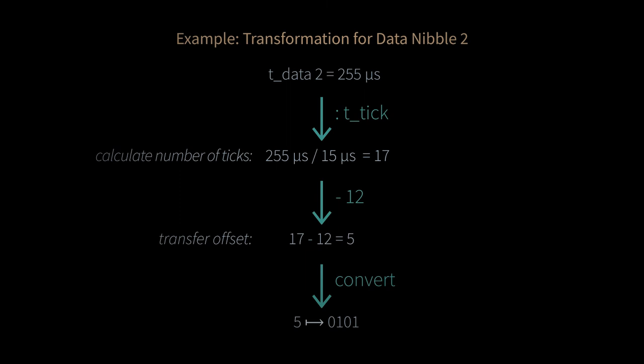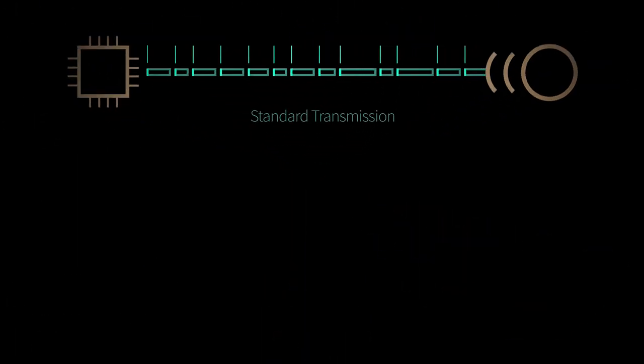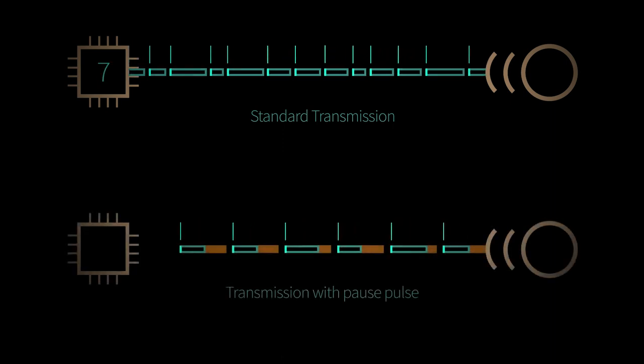So far, we dealt with the standard transmission in the SENT protocol. However, due to its time dependency, this implies that the individual data telegrams always have different lengths. This has the advantage that no idle times arise and the capacity of the line is always fully utilized under certain conditions.